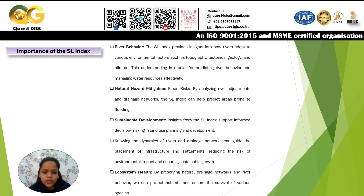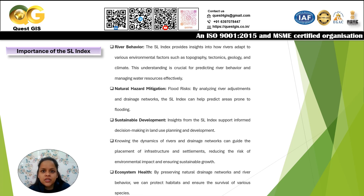The SL Index helps us understand how a river adjusts to topography through tectonics, geological factors, and climatic conditions along its course. Rivers flow through particular landscapes, and any change in that landscape — due to climate change, tectonics, resistant or soft rock types, fault zones, or anthropogenic activity along the river course or floodplain — will change the behavior of the river over time, and the SL Index can help identify those factors.